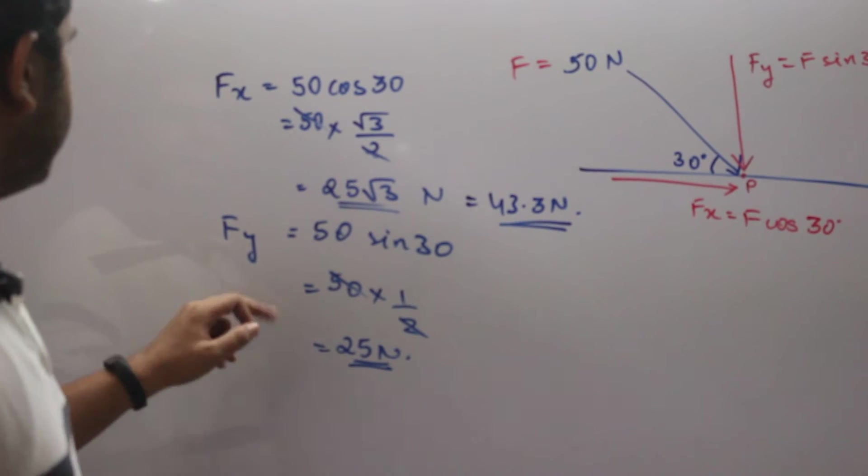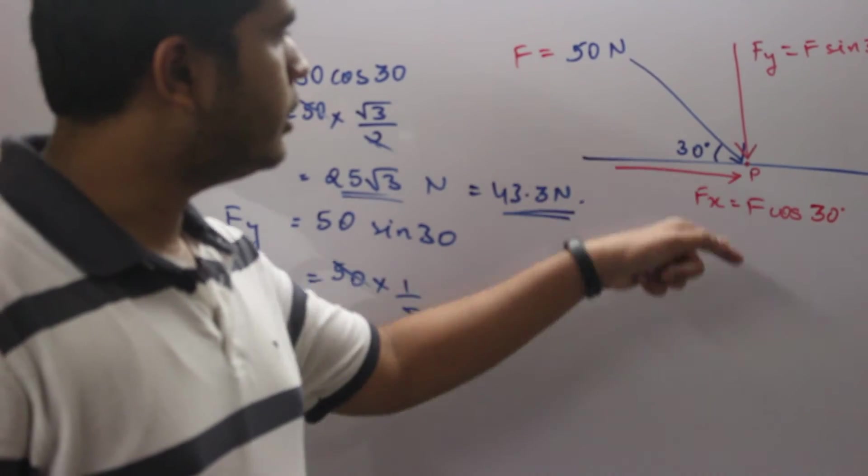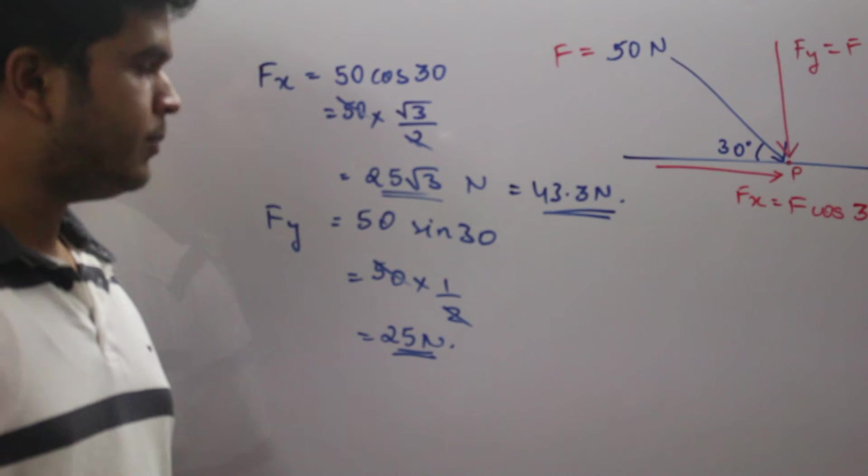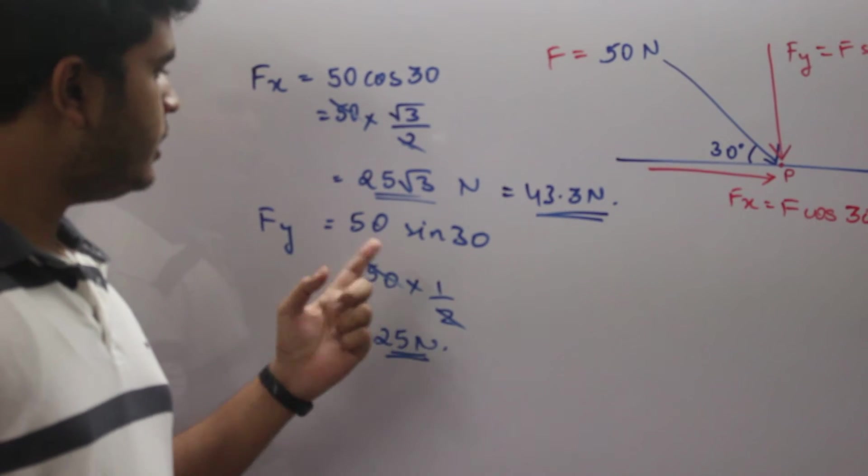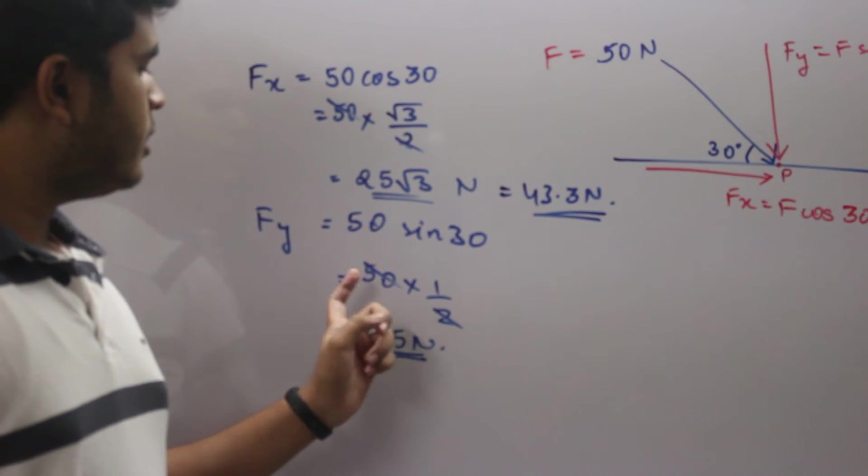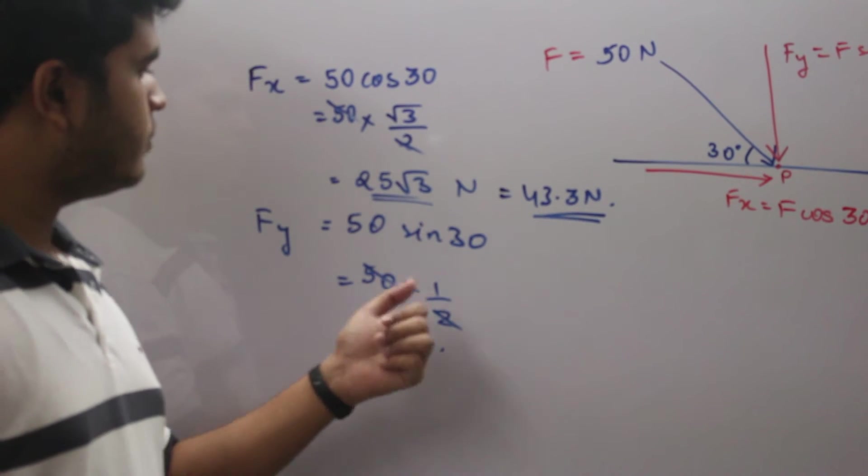Now let's calculate F_y. F_y is the vertical force. F_y is equal to F sin 30. The value of F is again 50 sin 30, so it's 50 into 1 by 2 because the value of sin 30 is 1 by 2.